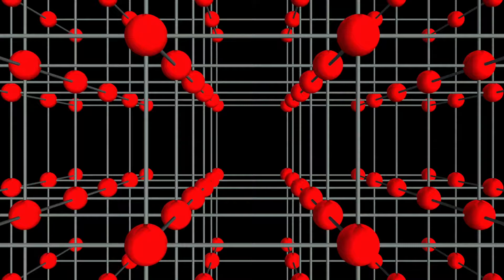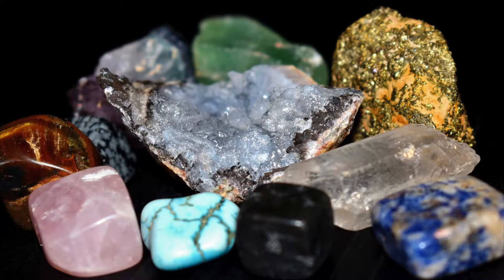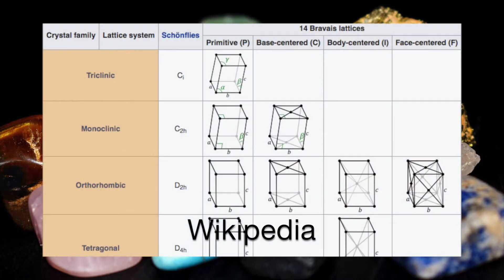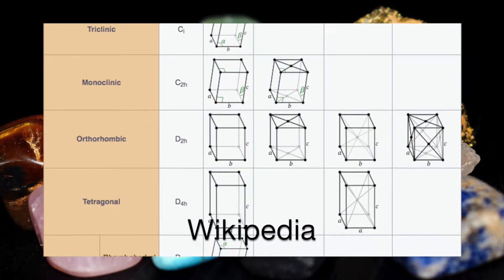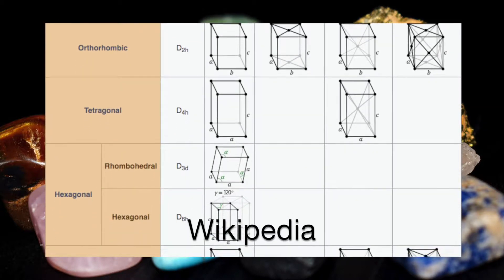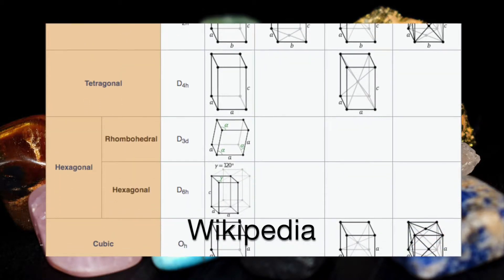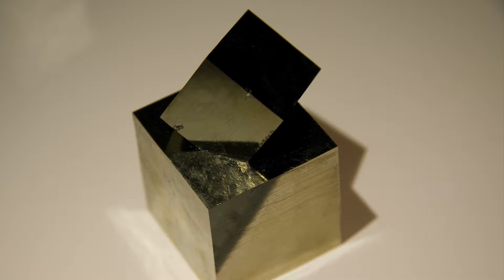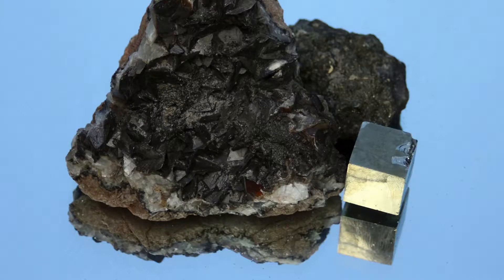Crystalline structure is highly ordered and it repeats itself in all directions. There are seven main structures found in minerals, which are distinguished by their symmetry. Every mineral on Earth has its atoms arranged in one of these seven categories. For example, pyrite crystals are cubic — that's the mineral often referred to as fool's gold.